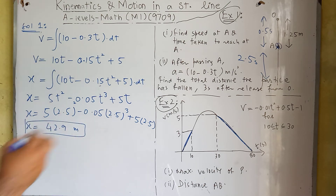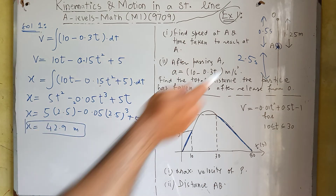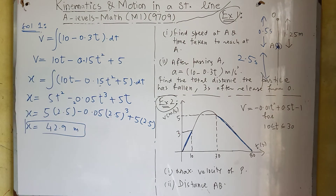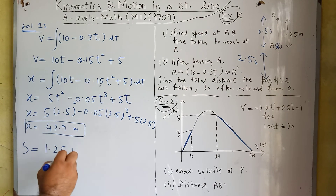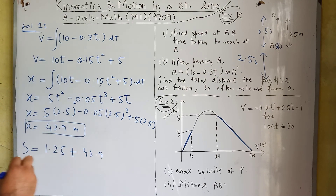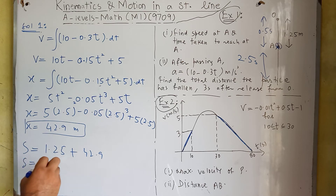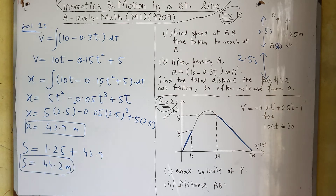The displacement during these 2.5 seconds is 42.9 meters. The total distance is 1.25 meters during the first 0.5 seconds, plus 42.9 meters during the next 2.5 seconds, giving a total of 44.2 meters covered by this body 3 seconds after being released from O.